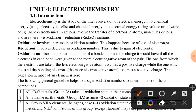Reduction involves decreasing oxidation number. This is due to gain of electrons — when an atom gains electrons, its oxidation number decreases.